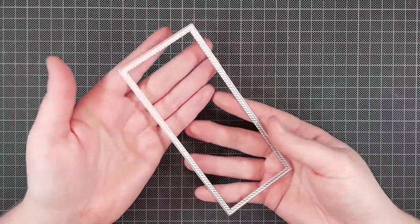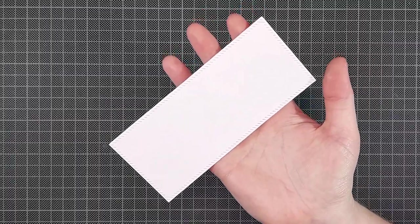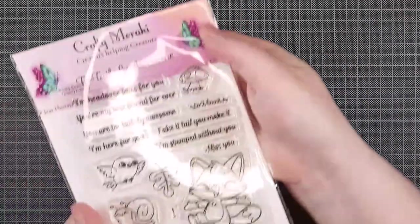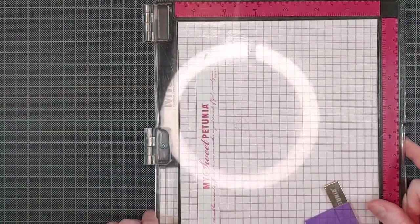I started out by die cutting a stitched rectangle from the Mini Slimline Essentials Bundle by Pinkfresh Studio and then I'm using the snail image from the Totally Awesome stamp set by Crafty Meraki.